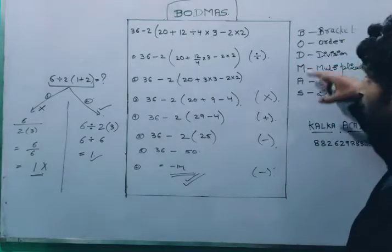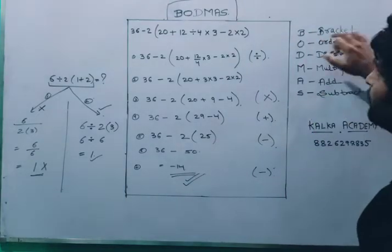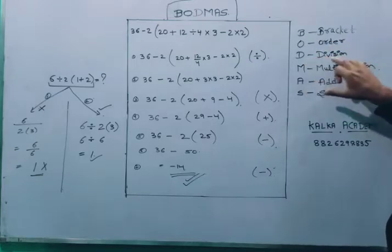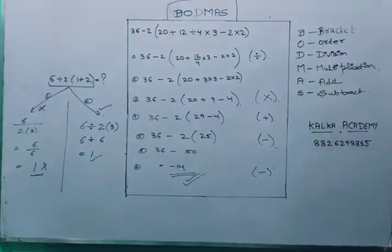Today we are going to discuss BODMAS. BODMAS is B for Bracket, O for Order, D for Division, M for Multiplication, A for Addition, S for Subtraction.